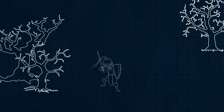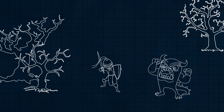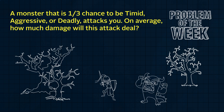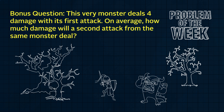You enter a clearing in the haunted forest, and a monster of unknown difficulty class attacks you. On average, how much damage will this attack deal? And a bonus question: let's say this very monster deals 4 damage with its first attack. On average, how much damage will a second attack from the same monster deal?